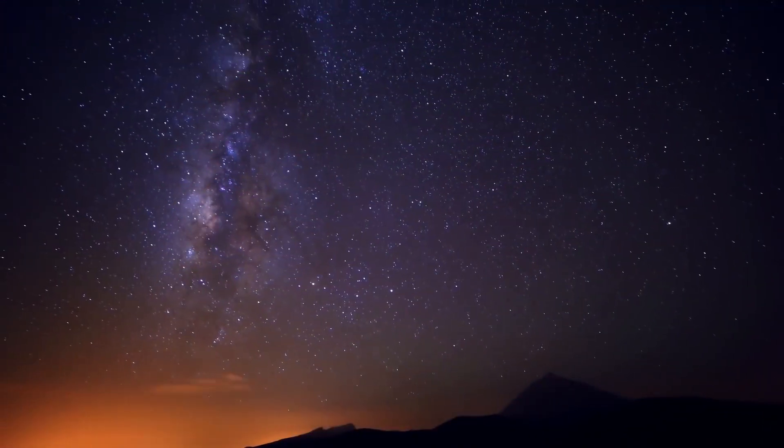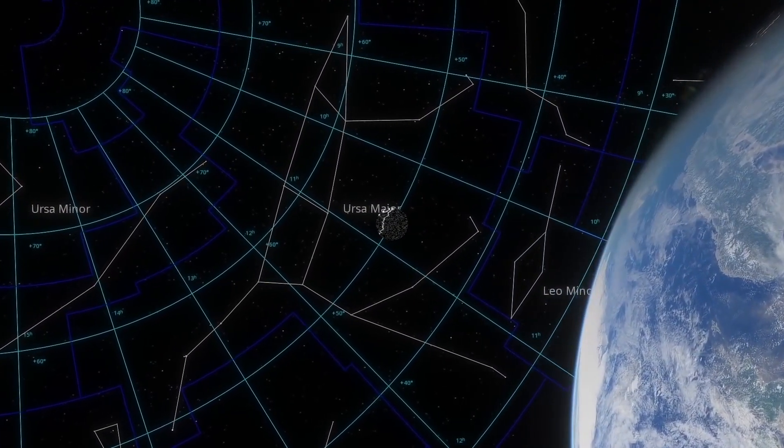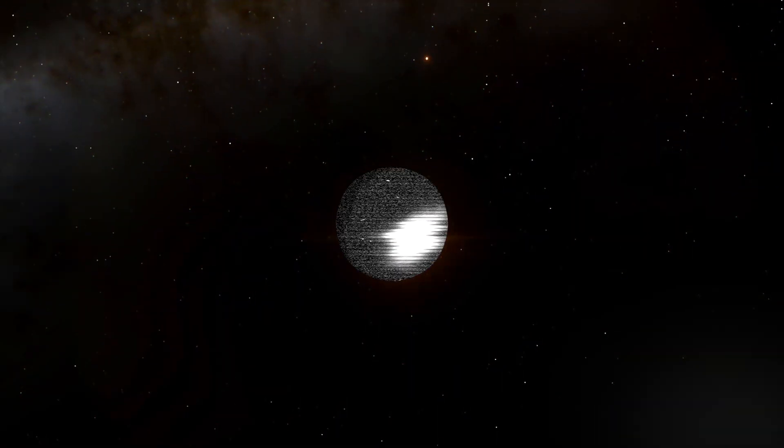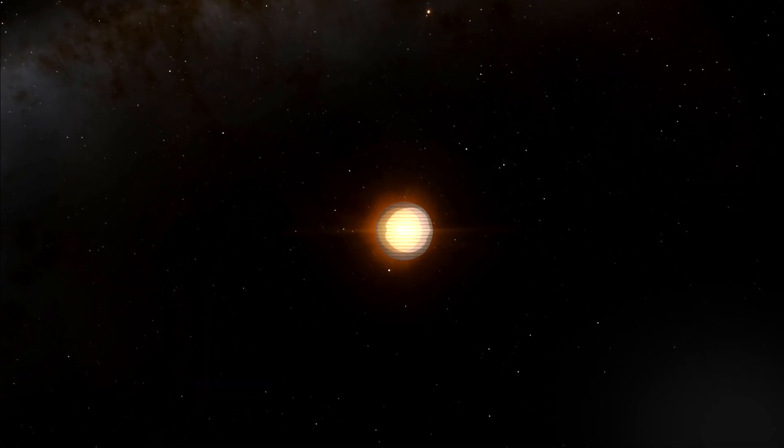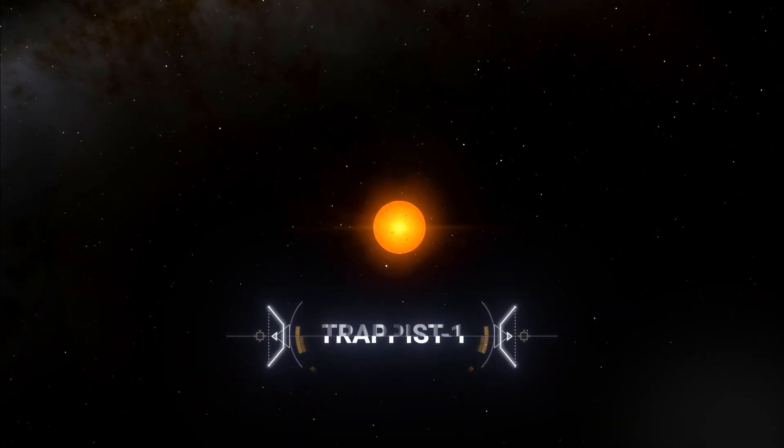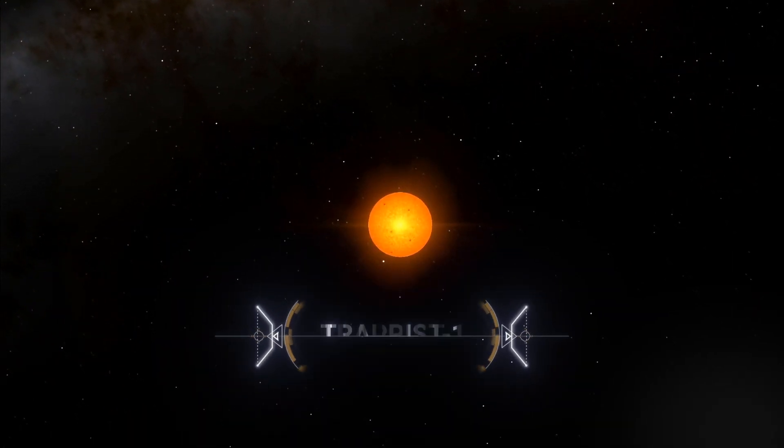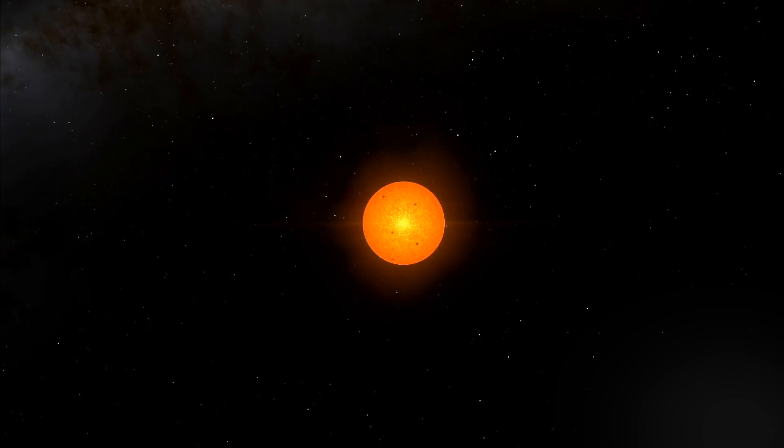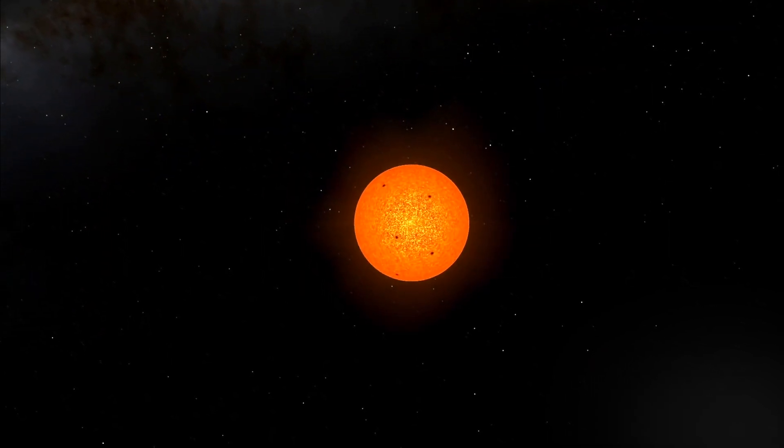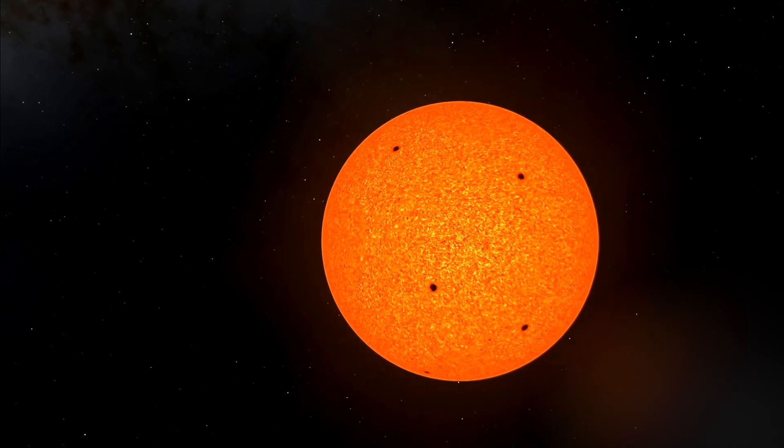Our journey now takes us far, far past our own solar system, to a red dwarf star 40 light-years away. This is the star Trappist-1, only 8% the mass of our sun and 2,000 times dimmer. But in terms of strangeness, this star certainly wins.